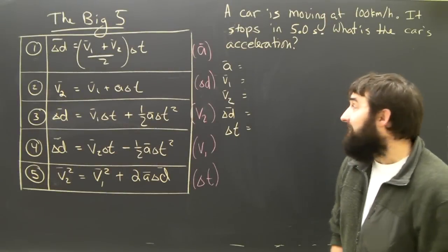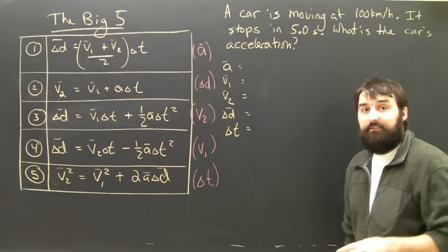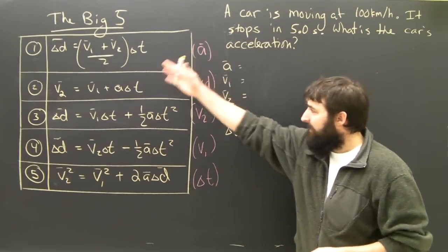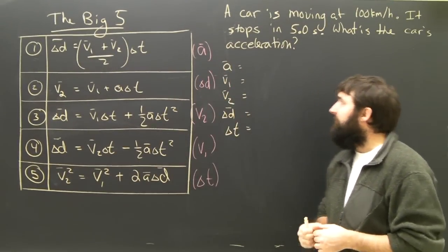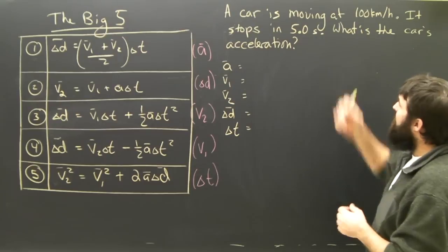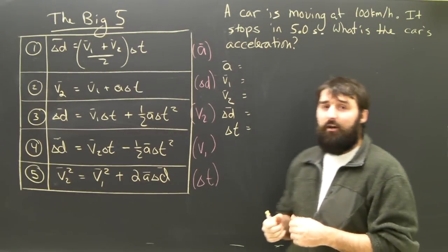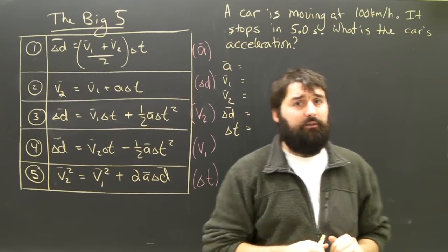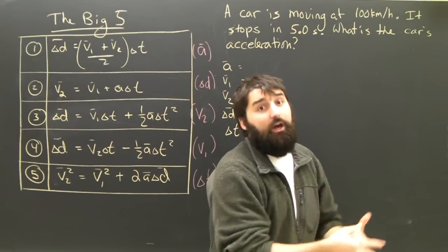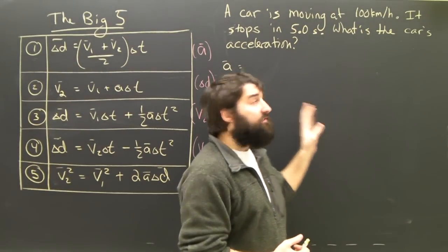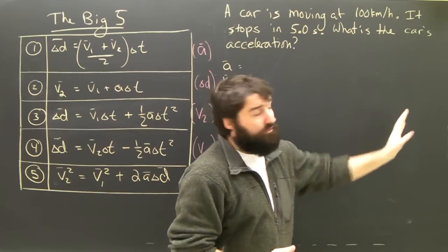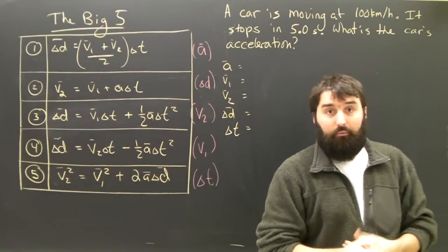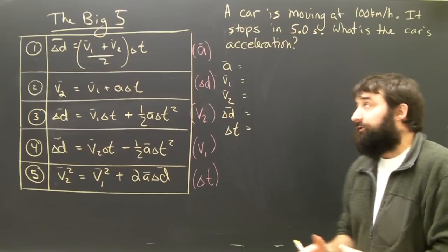Now we're going to look at a slightly more difficult acceleration problem. Again, we're going to use the big five. The question in this case is: a car is moving at 100 kilometers an hour when it stops. It takes five seconds for it to stop, and what is its acceleration?